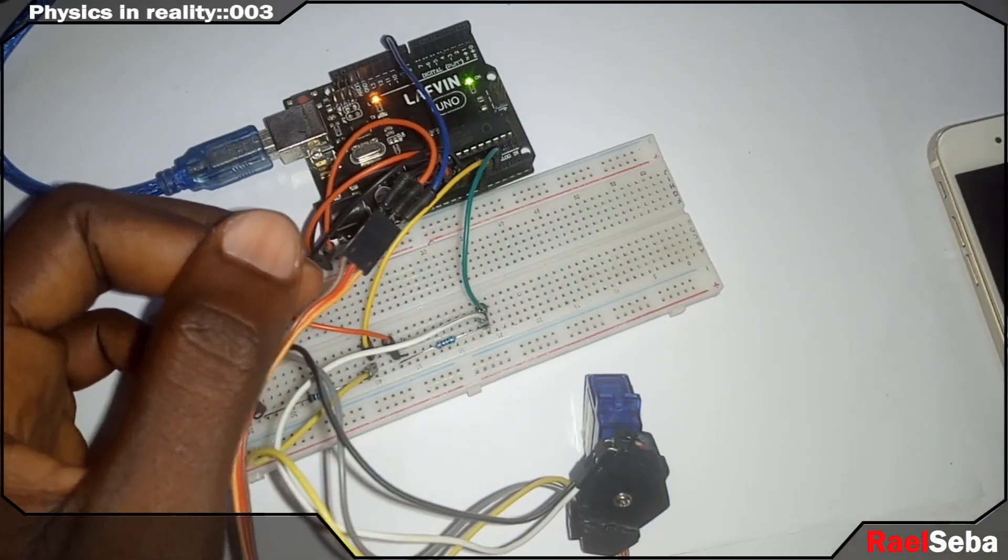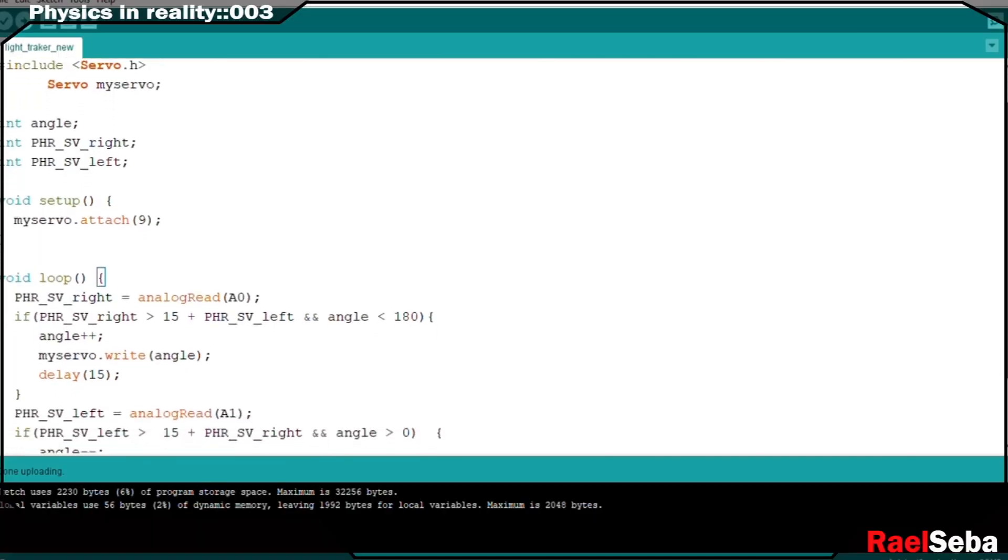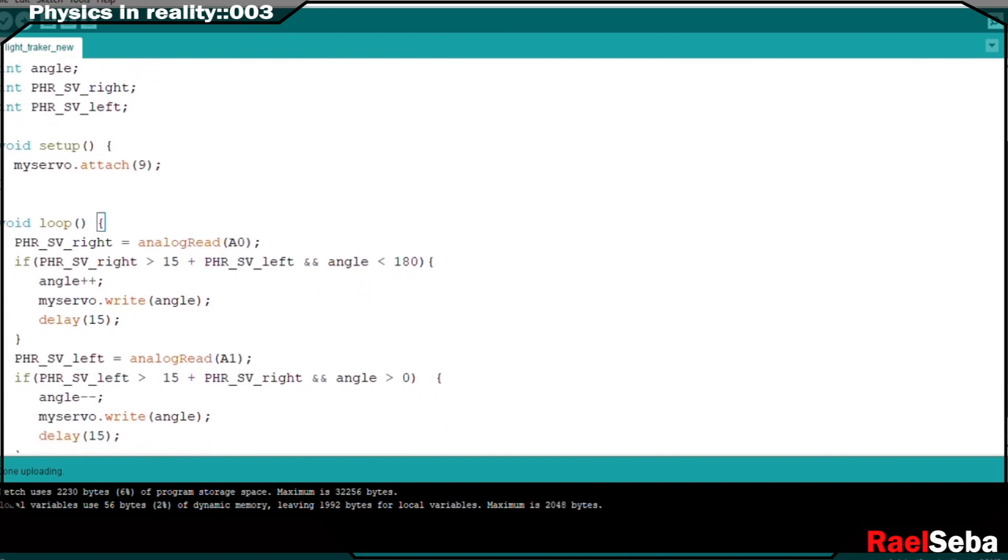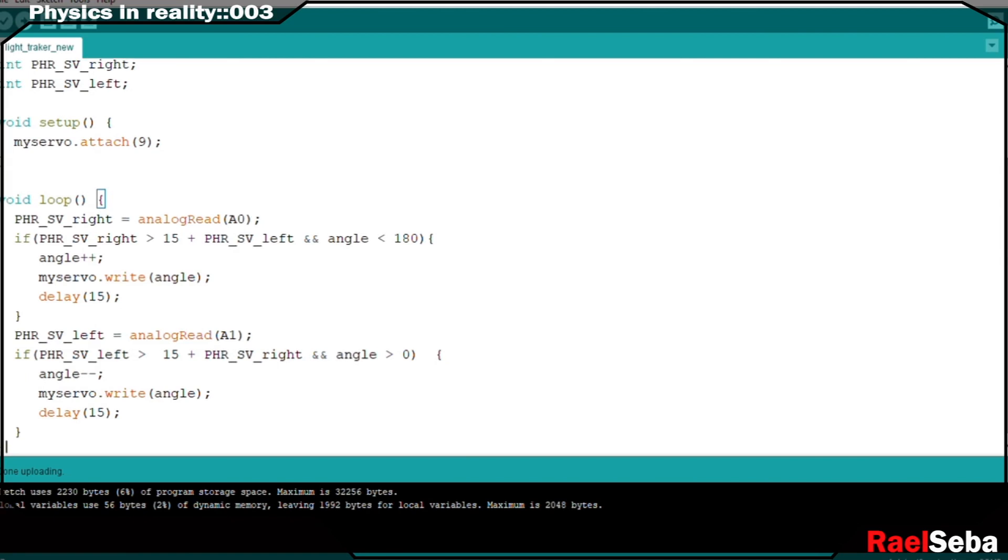Moving to the programming parts. If you go through it you understand it's a duplicate of one code with slight difference, using the photoresistor sensitivity to control the movement of the servo motor.